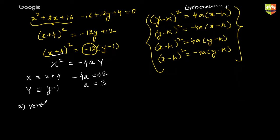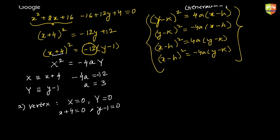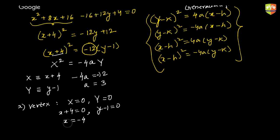For vertex, capital X is 0 and capital Y is 0, so x plus 4 equals 0 and y minus 1 equals 0. Your vertex would be at (−4, 1).